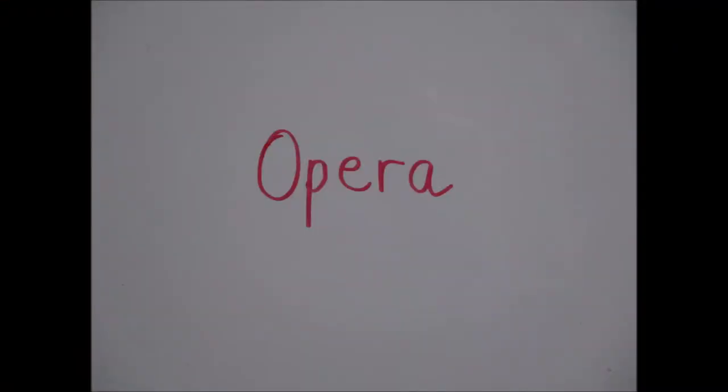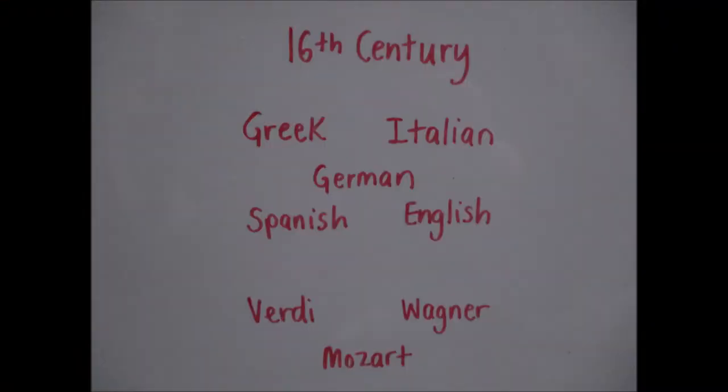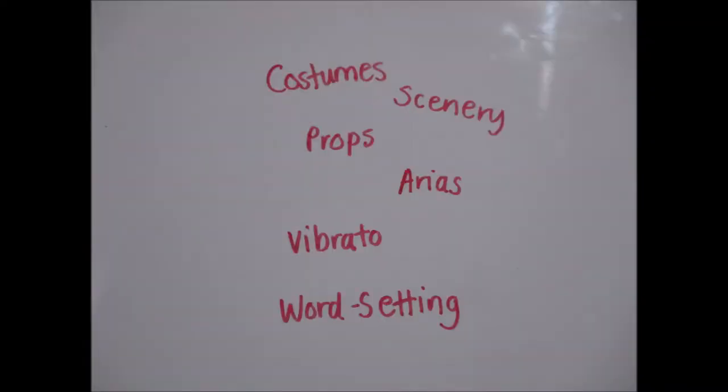Opera. Opera came to light in the 16th century. Lots of operas are written in Greek, Italian, German, Spanish and some in English too. Popular opera composers are Verdi, Wagner and Mozart. Aside from music, operas use costumes, scenery and props. They have special songs called Arias to drive the narrative. Singers sing with a vibrato voice and use word setting for the lyrics.